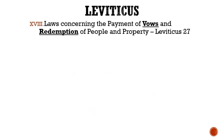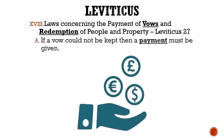Roman numeral 18: The laws concerning the payment of vows and redemption of people and property is given in Leviticus 27. Letter A: If a vow could not be kept, then a payment must be given. A person was expected to keep whatever vow he or she made, but if they could not and it was made to the Lord, then a payment must be given, and depending upon the person's age and gender, that payment could go up or down.